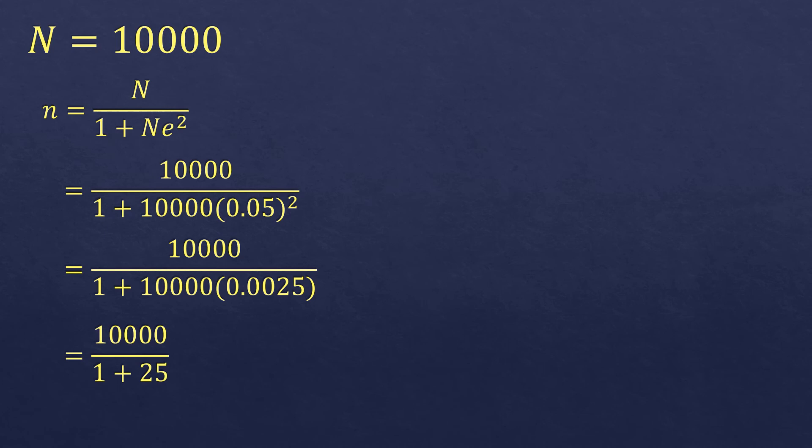So 1 plus 25 is 26. And divide 10,000 by 26, it will be 384.62. So this is a decimal number. So we always round up. It's not because it's 0.6, but because there is a decimal. That's why we are rounding up. So it will be 385.